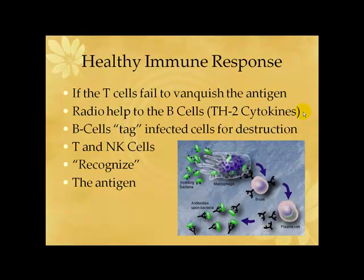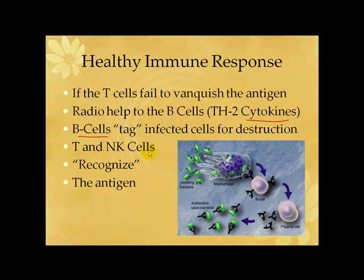The call for help goes to the B-cells via the TH2 cytokines, which are hormone-like substances that communicate cell-to-cell to initiate a new response. The B-cells come out and tag the infected cells for destruction. For example, in hepatitis, the virus gets inside the liver cells; it tags those infected cells for destruction, and then the T-cells and natural killer cells can recognize the antigen and remove it.